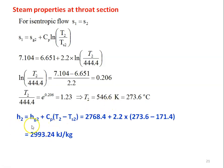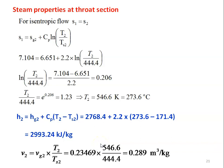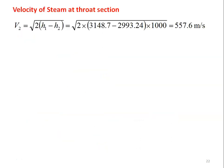The enthalpy at the throat: H2 = HG2 + Cp·(T2 - Ts2) = 2768.4 + 2.2·(273.6 - 171.4) = 2993.24 kJ/kg. Specific volume at the throat: V2 = VG2·(T2/Ts2) = 0.2346 × (546.6/444.4) = 0.289 m³/kg. Since there is no friction up to the throat, the velocity at throat: V2 = √(2·(H1 - H2)) = √(2 × (3148.7 - 2993.24) × 1000) = 557.6 m/s.